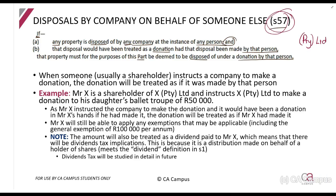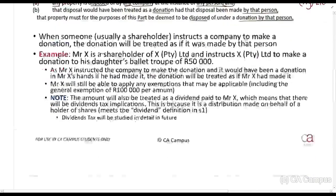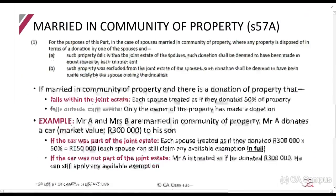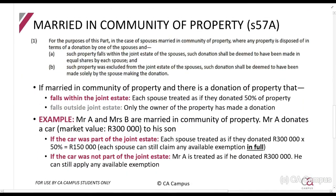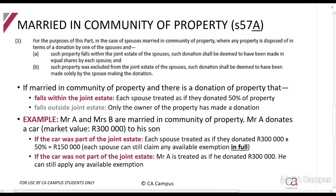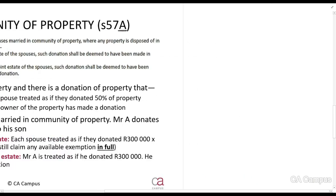They say 'any company,' so if a public company did the same thing it would also apply — it's just very unlikely, as public companies usually have more shareholders. But it is possible. That's Section 57. Section 57A says: if you are married in community of property and you make a donation of property as part of the joint estate...